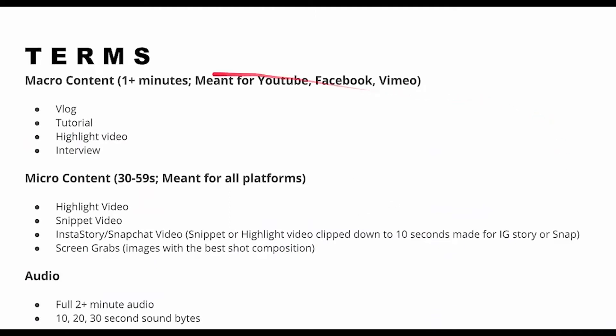The different terms: macro content is anything that's one-plus minutes. This stuff is meant for YouTube, Facebook, Vimeo — it can be a vlog, a tutorial, a highlight video, an interview. It's essentially long-form content, one minute and on. You know, a movie — that kind of stuff.